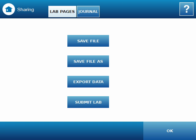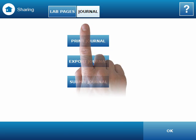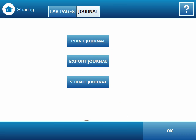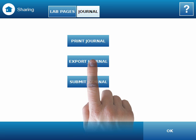If it's preferred that students turn in only their journals, we can select the Journal tab at the top of the screen. In this screen, I have the option to print my journal directly from the Spark Science Learning System to a supported printer or export the journal to a USB flash drive. I'll make sure my USB flash drive is connected to the top of my Spark Science Learning System and then select Export Journal.